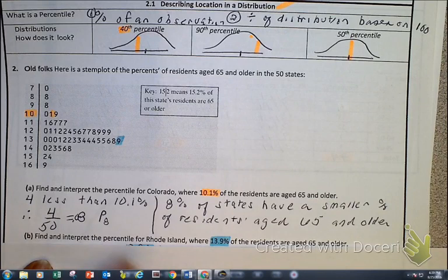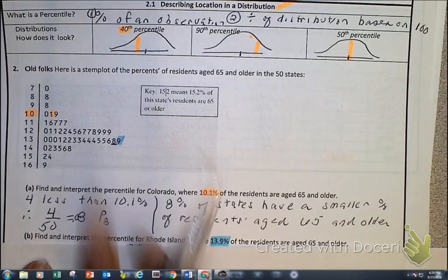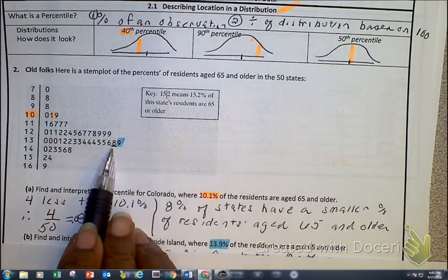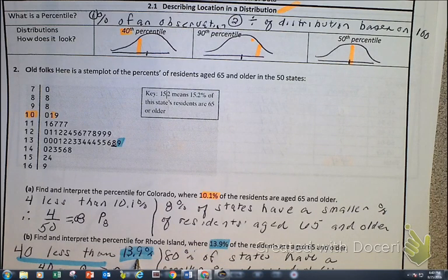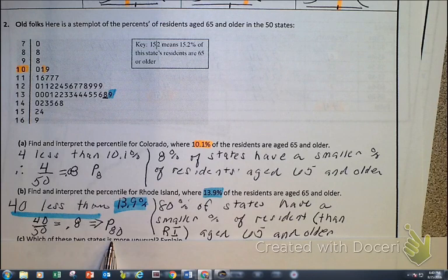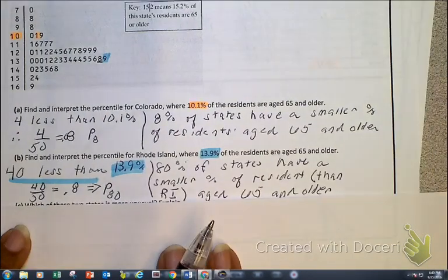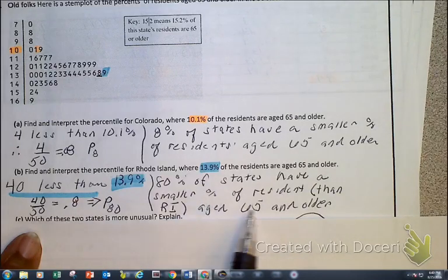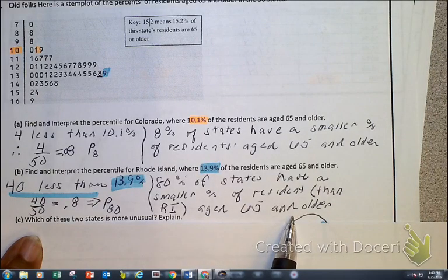First of all, go ahead and count. You're going to keep counting until you get to that number right before it. And tell me how many that is. Yes, there are 40 of them that are less than that spot right there, which represents 13.9%. So 40 less than that 13.9%. So that's 40 divided by 50. That's the 80th percentile. And here we can see that's P80. Basically putting it in context, or interpreting, that's a better way of putting it. So 80% of the states have a smaller percent of residents age 65 and older than Rhode Island.